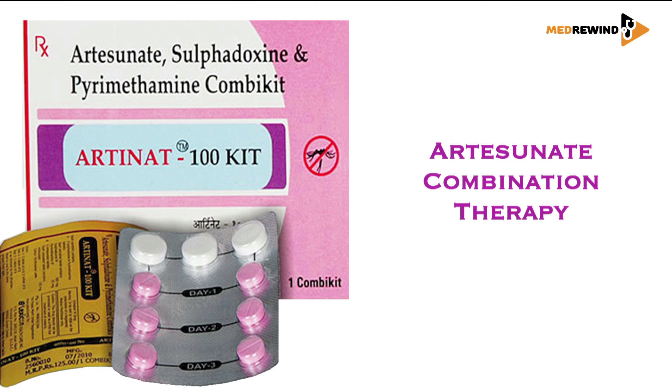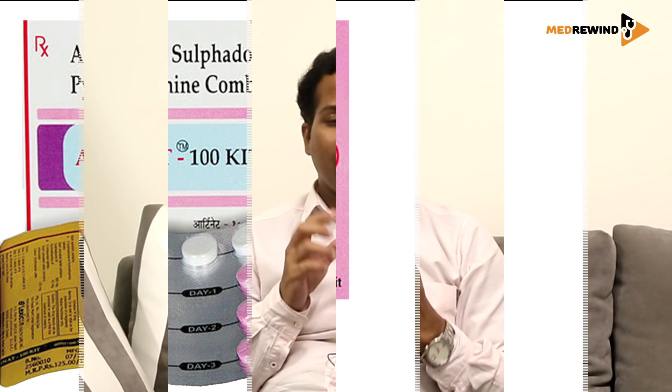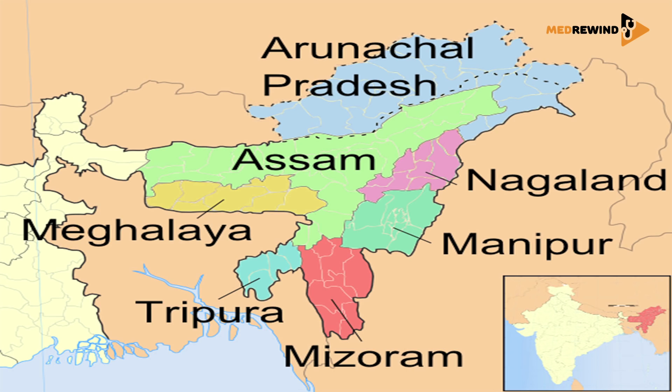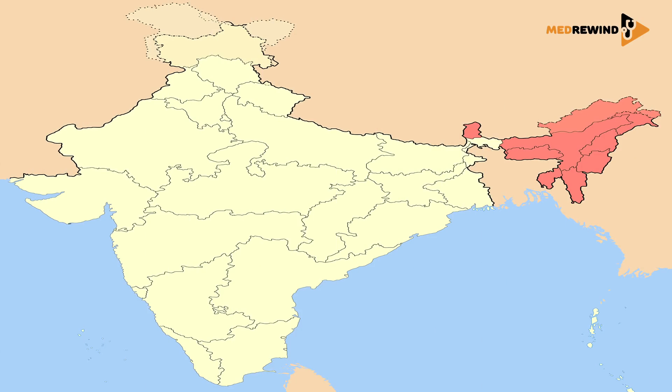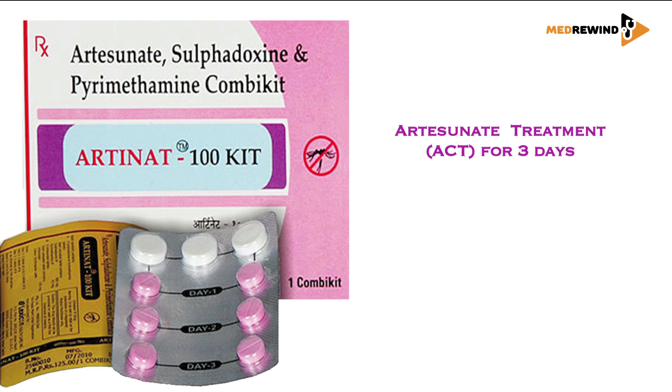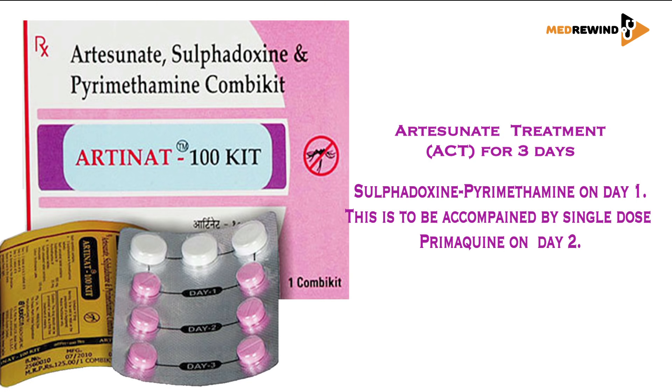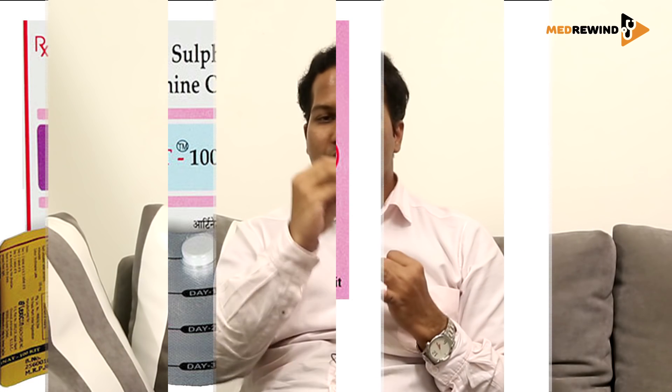For falciparum malaria, there is significant resistance to chloroquine, so we use ACT — Artesunate Combination Treatment. In the non-northeastern states of India, the guideline is a three-day regimen of artesunate on days one, two, and three, plus a single dose of sulfadoxine-pyrimethamine given on day one along with the artesunate.